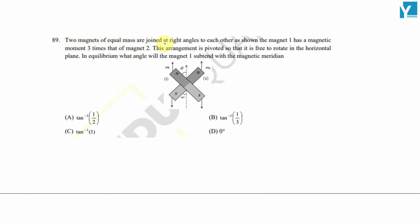Two magnets of equal mass are joined at right angles to each other. Magnet one has a magnetic moment three times that of magnet two. This arrangement is pivoted so that it is free to rotate in the horizontal plane. We have magnet one and magnet two, both of equal mass, joined at right angles. The magnetic moment of magnet one is equal to three times the magnetic moment of magnet two.